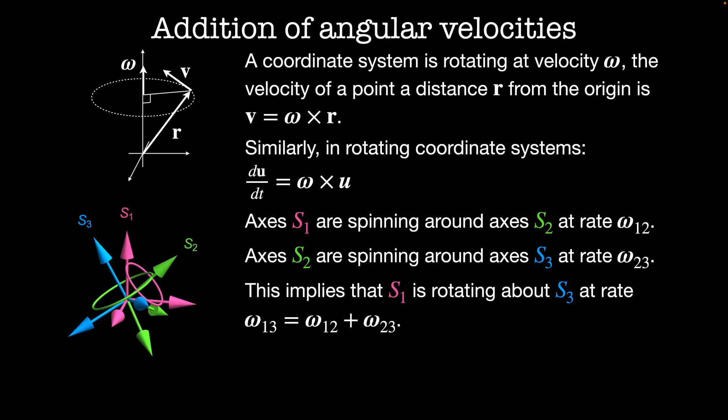Imagine now we have a point P in the lab frame, and it's traveling at velocity VP in the lab frame. Then in coordinate system S1, the velocity of this point is equal to omega 12 cross the position P. In coordinate system S2, it's traveling at VP equals omega 23 cross the position P. And in coordinate system S3, it's traveling at VP equals omega 12 plus omega 23 cross the position P.